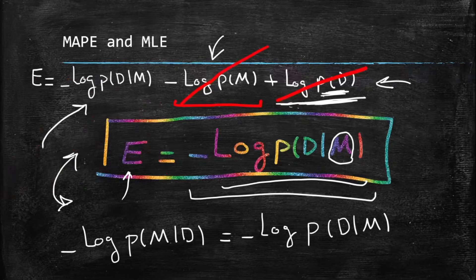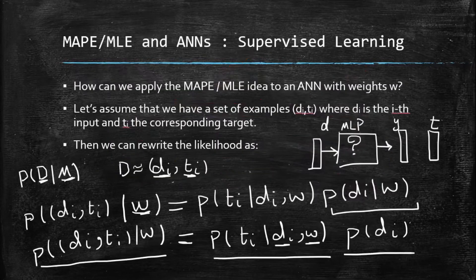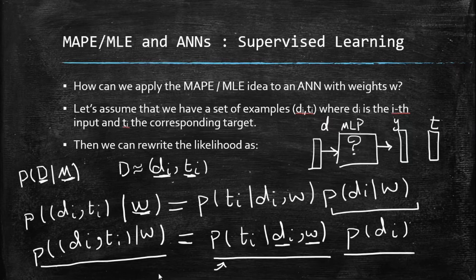As a reminder: the error we talked about equals minus log of the likelihood. If we plug in the input and the ground truth, we come up with a formula involving the probability of the target value given the input and weights, multiplied by the probability of the input. Let's remember this and keep going.